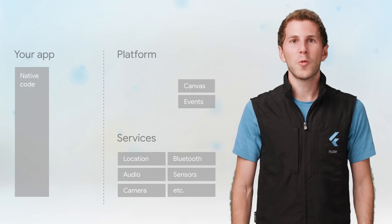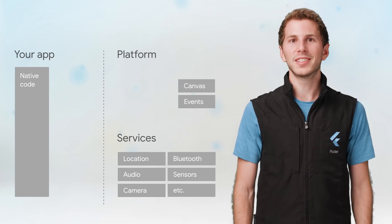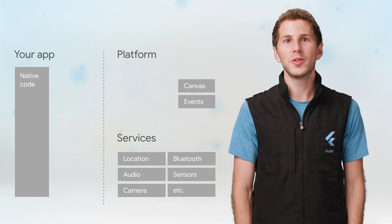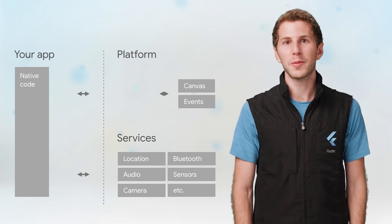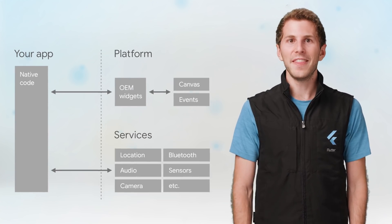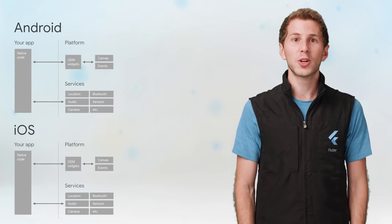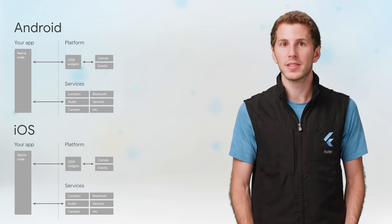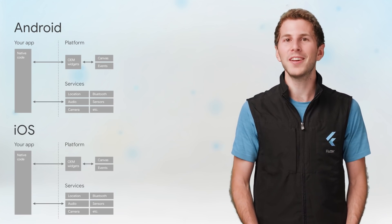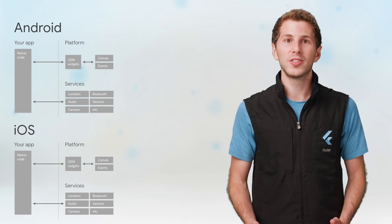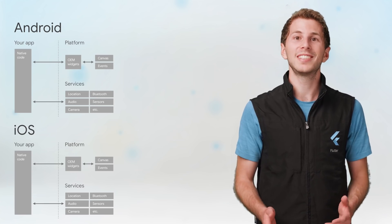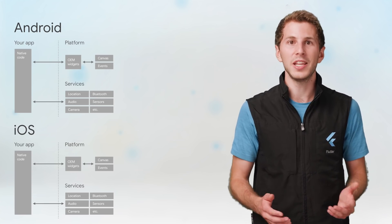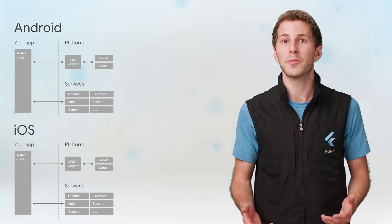Let's look at how this contrasts with other ways to build for different platforms. One option is to build a separate app for each platform, which often involves a separate team for each code base. In this system, your code can directly call the built-in platform UI elements, but each code base will be in a different native language, and your teams will need to ensure consistency between the feature sets in each code base as the app grows.